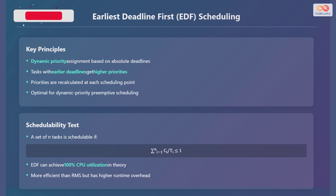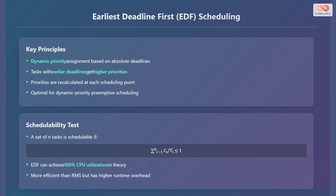Earliest Deadline First, or EDF, is a dynamic priority assignment technique where tasks with earlier deadlines get higher priorities. The priorities are recalculated at each scheduling point, making it optimal for dynamic priority preemptive scheduling. A set of N tasks is schedulable if the sum from i equals 1 to N of C_i divided by T_i is less than or equal to 1.